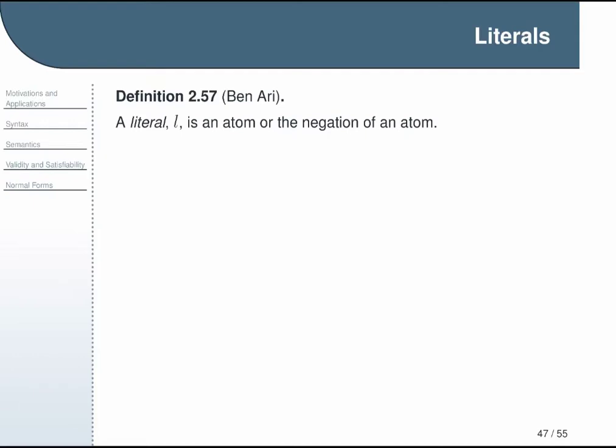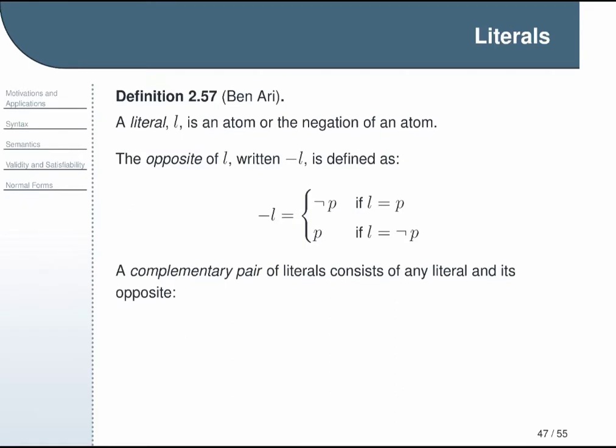You can refer to a specific literal with a variable, and here we're using l. We also have a definition of the opposite of a literal written negative l, and this is just the negation of whatever l is. So if l is p then its opposite is not p, and if l is not p then its opposite is p. If you match up any literal with its opposite, this is called the complementary pair of literals.